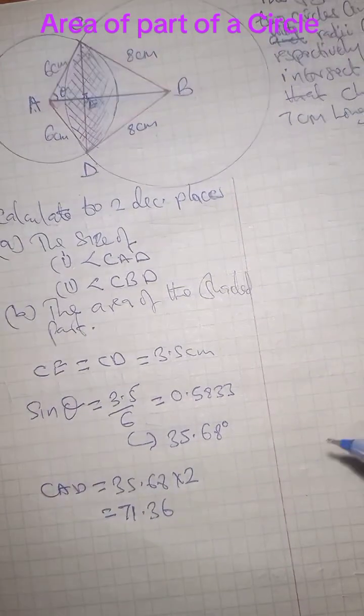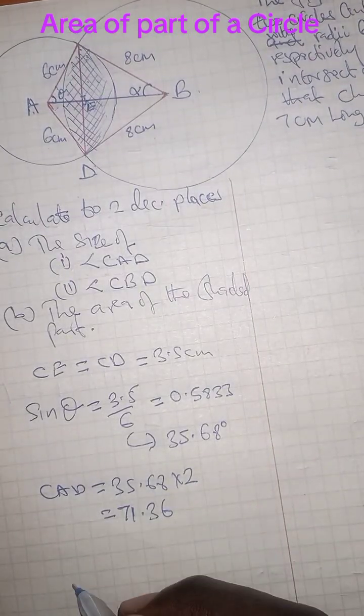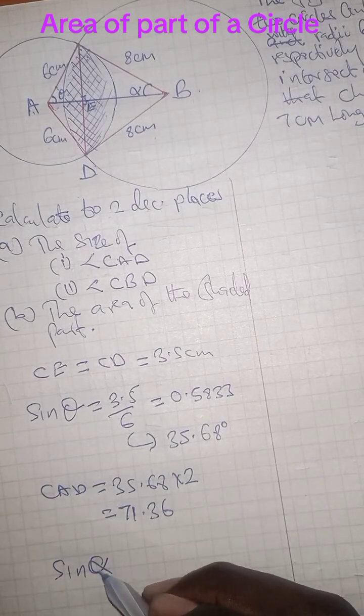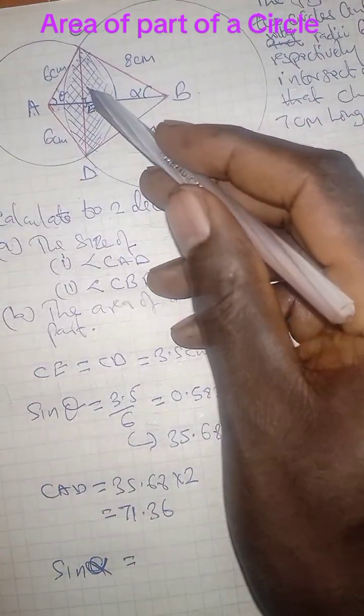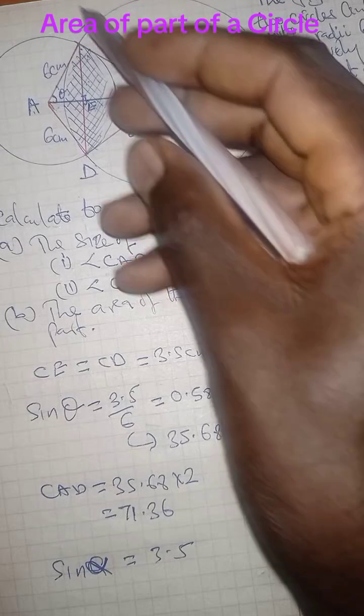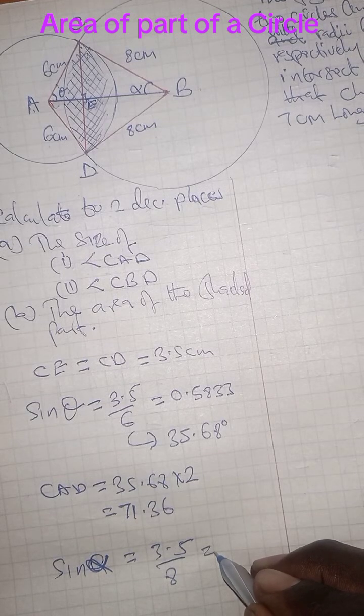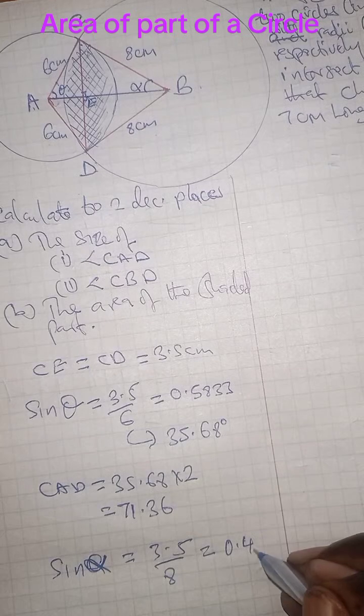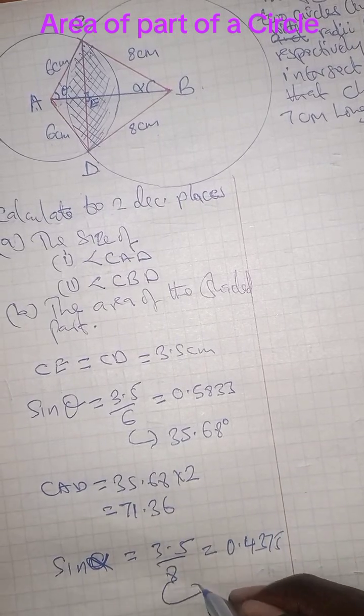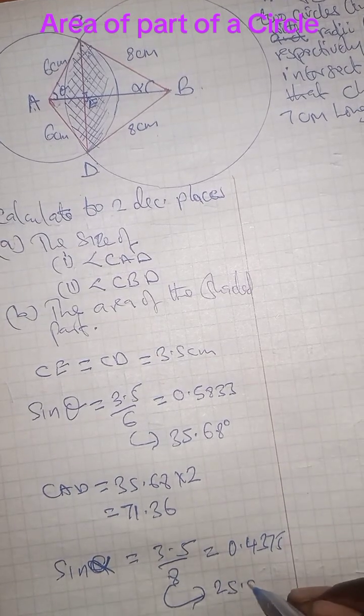We can do the same on this side. Let's say this is angle alpha. We have sine alpha is equal to the opposite side which is 3.5 cm and then the hypotenuse which is 8. This gives us a figure of 0.4375. Look at this figure from the table. You get that this angle is 25.94.